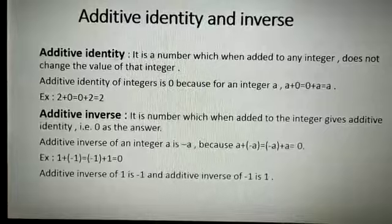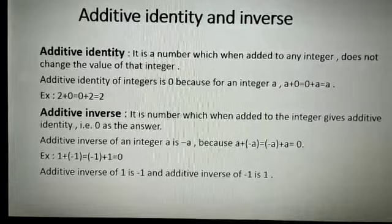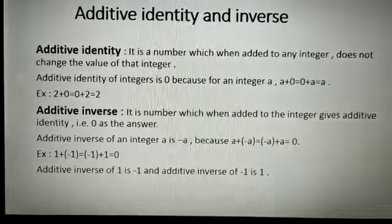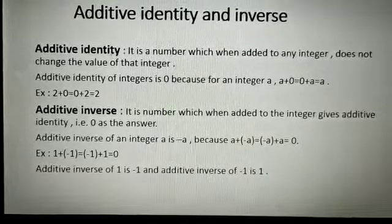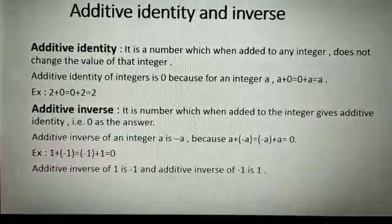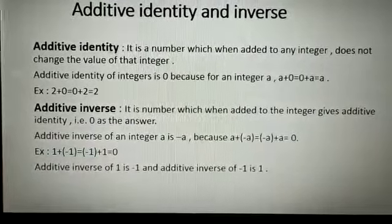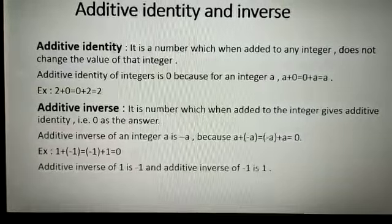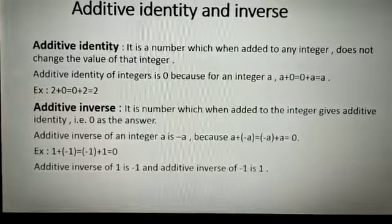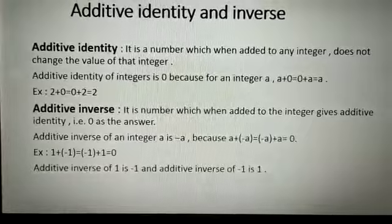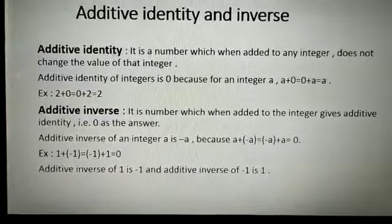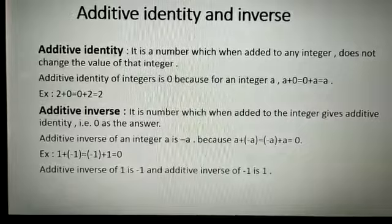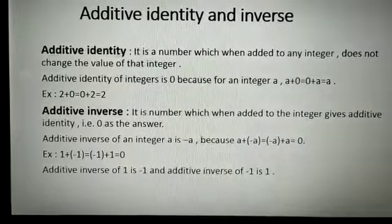Next thing is additive identity and inverse. We have seen that zero is the additive identity, and the opposite number of a number is the additive inverse of that number. That means, if we have to find the additive inverse of plus 5, then minus 5 will be the additive inverse.